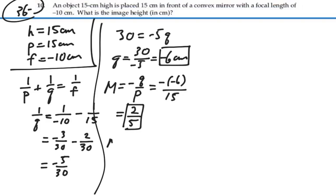That also should be equal to our image height over our object height. So our image height will equal two-fifths times our object height, h, which is 15. So that is going to be 6 centimeters.